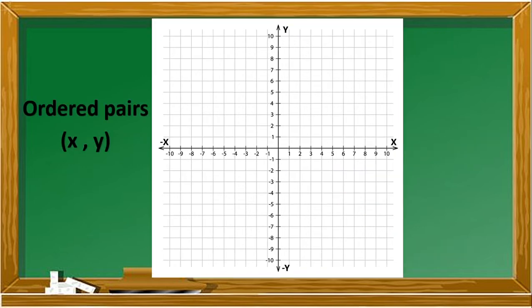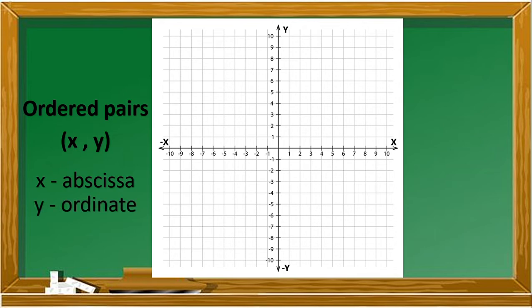Ordered pairs of numbers are used to locate points in a plane. The points are named with reference to the two perpendicular number lines. The first number or coordinate of an ordered pair corresponds to a number on the x-axis — it is called the abscissa. The second number of the ordered pair corresponds to a number on the y-axis, and it is called the ordinate.